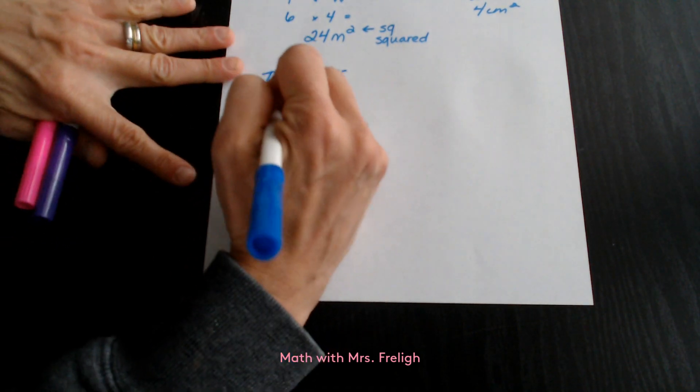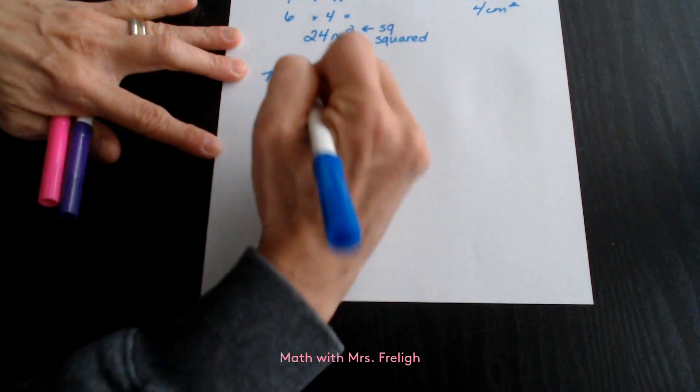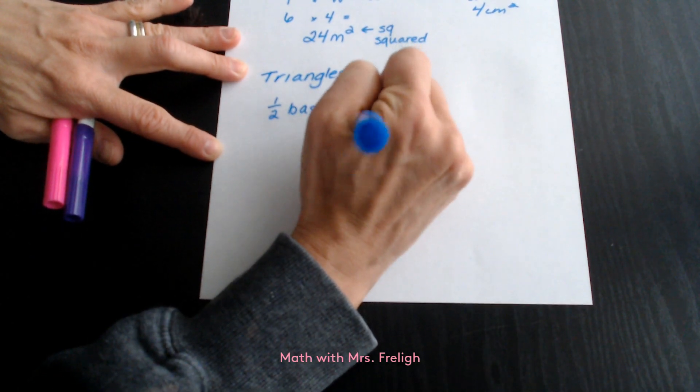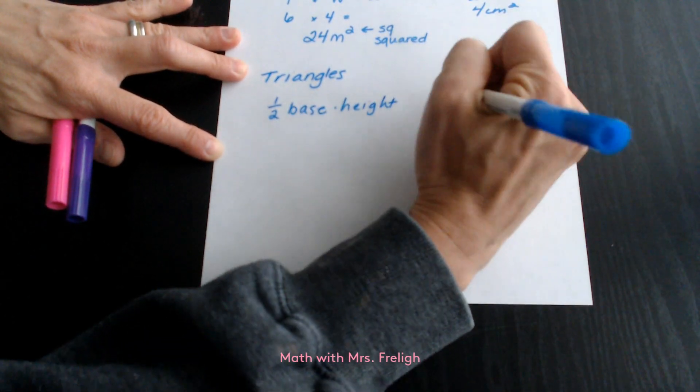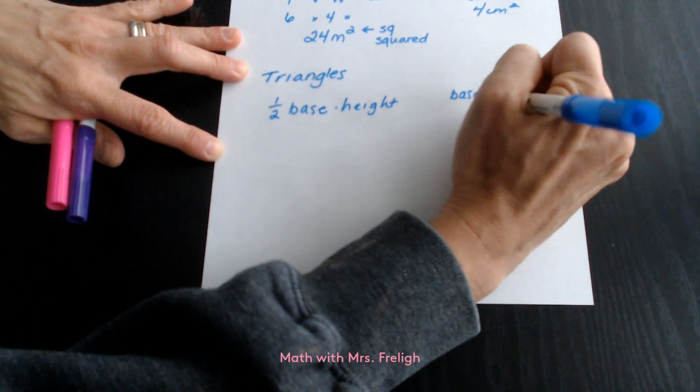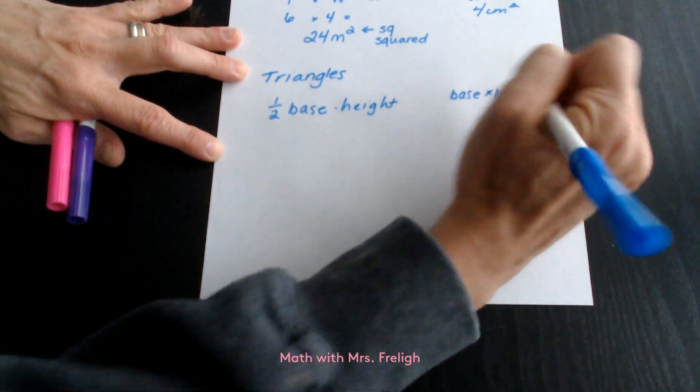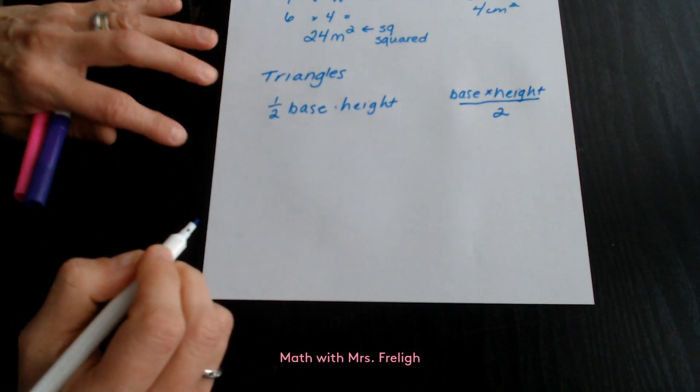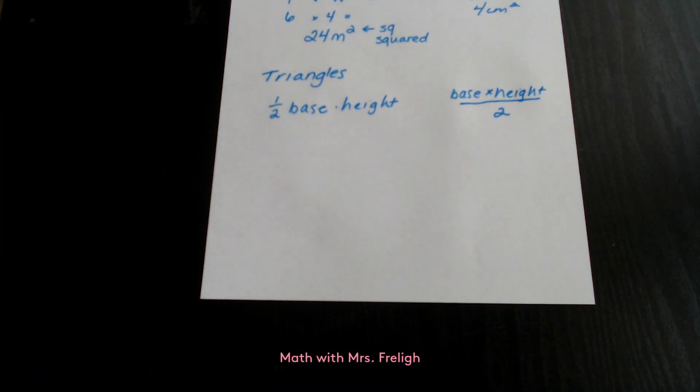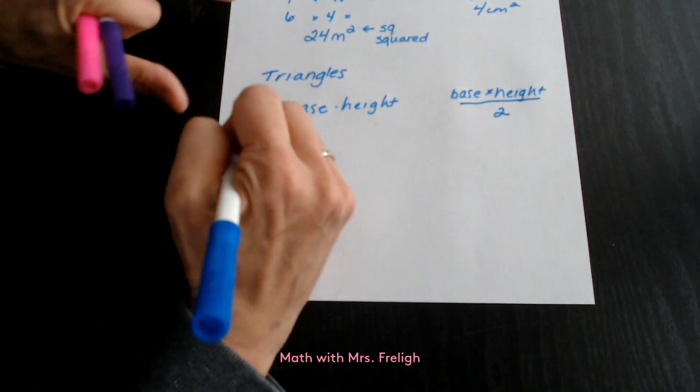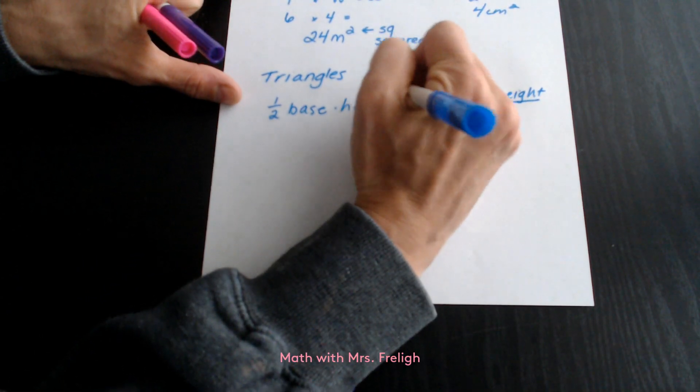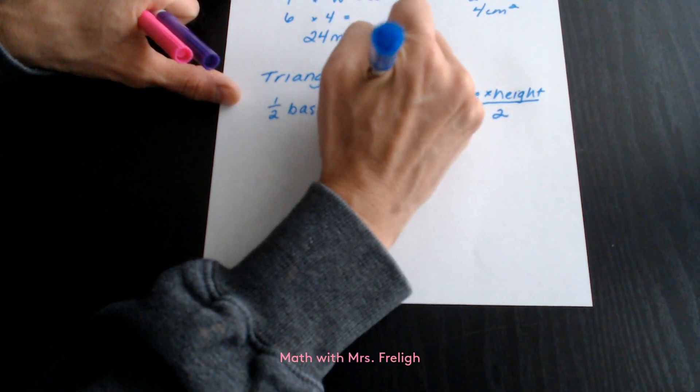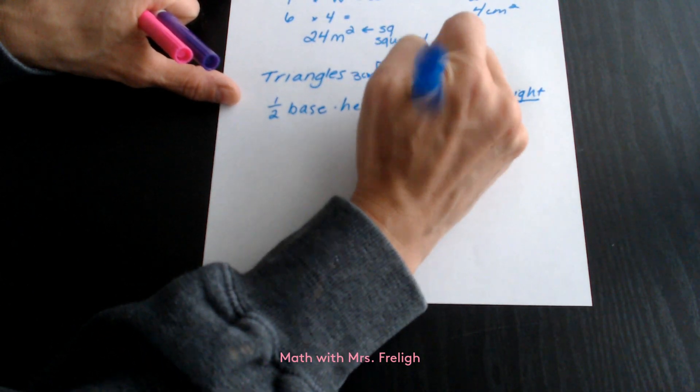we have two formulas we can use. We can use half the base times height, or we can use base times height divided by 2. Either formula will give us the same answer. When we are looking at a triangle, let's say we have the triangle here. We have 3 centimeters and 6 centimeters.